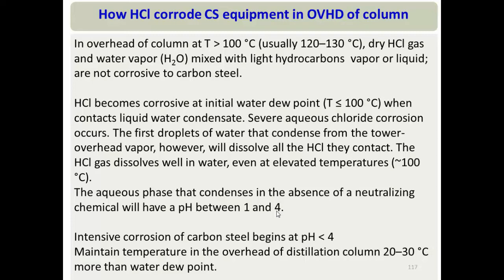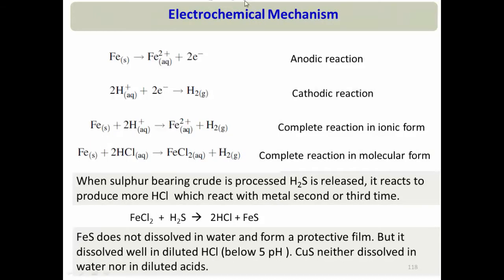When temperature goes below 100°C or the dew point, water vapor condenses, dissolves HCl, the system becomes acidic, and corrosion occurs. The mechanism: iron from the metal behaves as the anode and corrodes; H⁺ accepts electrons and behaves as the cathode. Iron of the metal reacts with hydrogen chloride, ultimately forming iron chloride.